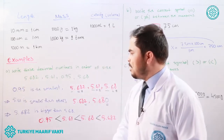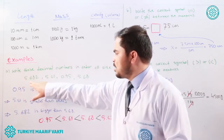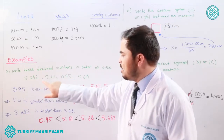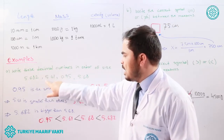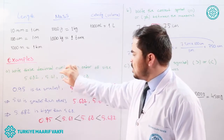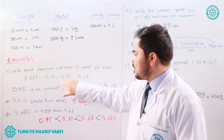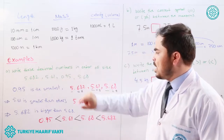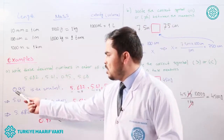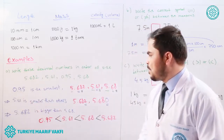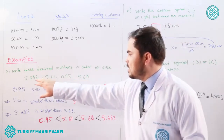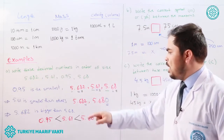In all these numbers, three have five as the whole part and one has zero. Since zero is the smallest whole number, zero point nine five is the smallest number of the group.